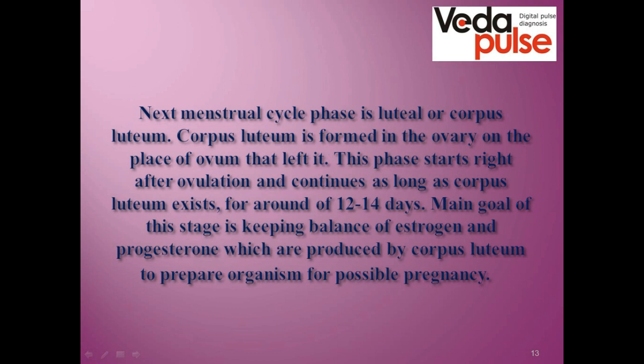The corpus luteum starts producing the second sex hormone, progesterone. This occurs around the 12th–14th day of the cycle. The main function of progesterone is to prepare the body for possible pregnancy; it is also called the pregnancy hormone because it regulates the woman's mood and changes the uterus so it is ready for pregnancy and all conditions are created to carry out a normal pregnancy. If this doesn't happen, the progesterone level reduces.